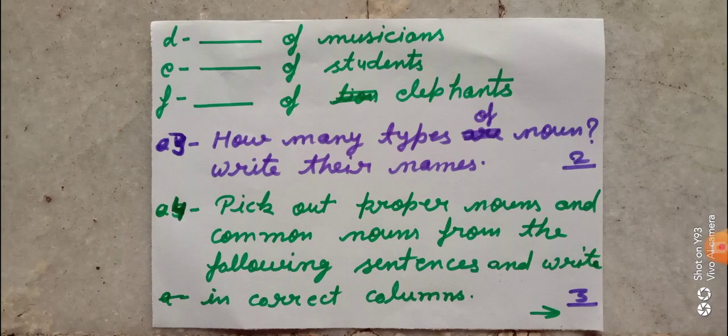Question number three: How many types of nouns? Write their names. Noun kitne prakar ke hote hain, aapko unke naam likhne hain. First you will write the types of nouns — kitne prakar ke hote hain — aapko counting likhni hai. After that you will write the names of nouns.